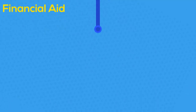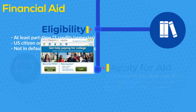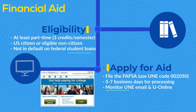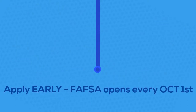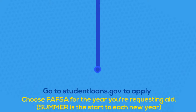You must be eligible for federal financial aid. If you are, file the FAFSA with UNE's six-digit code. Allow at least five to seven days for us to process your information. Please note the FAFSA opens October 1st for the next year, and summer is always the beginning of UNE's new school year.